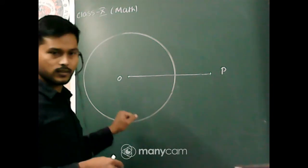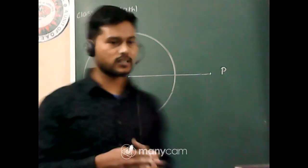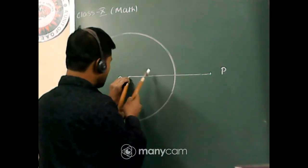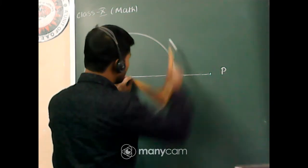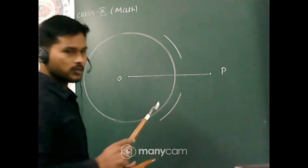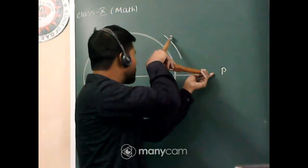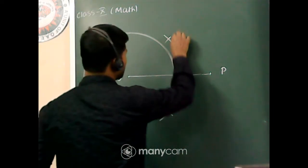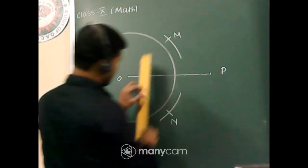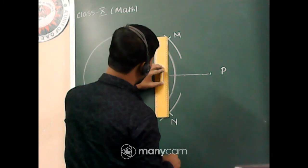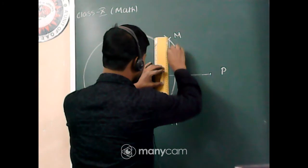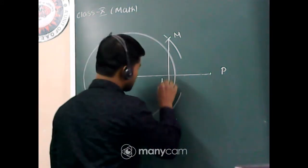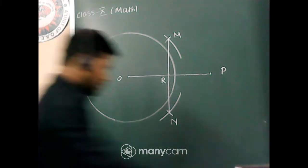First, draw the perpendicular bisector of line segment OP. Set your compass at O with a radius more than half of OP and draw two arcs. Without changing the measurement, repeat from point P. The two arcs intersect at points M and N. Join M and N to get the midpoint of OP, and let the midpoint be R.